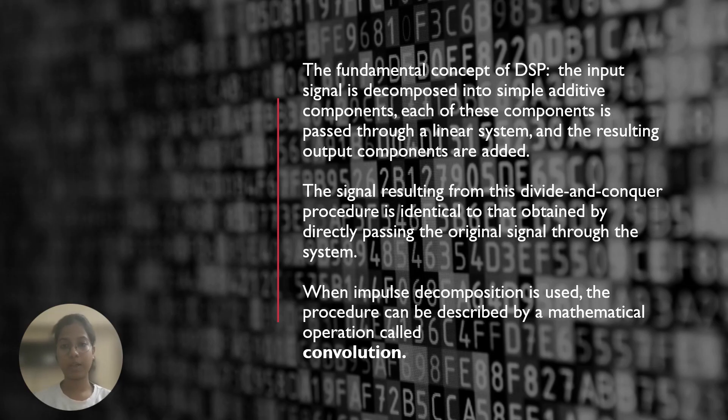The fundamental concept of DSP is that the input signal is decomposed into simple additive components. Each of these components is passed through a linear system, and the resulting output components are added. The signal resulting from this divide and conquer procedure is identical to that obtained by directly passing the original signal through the system. When impulse decomposition is used, the procedure can be described by a mathematical operation called convolution.